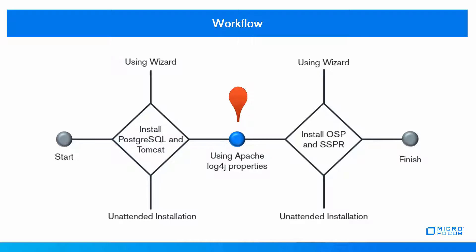Step 3: Install OSP and SSPR components using the wizard, or you can also perform a silent installation. After installing these components, install and configure the Identity Applications to use single sign-on access and password management functionality.